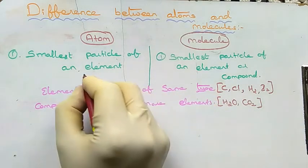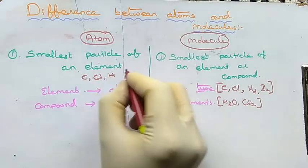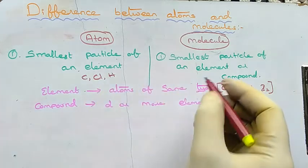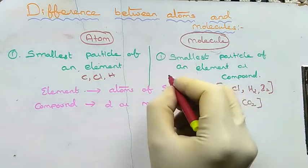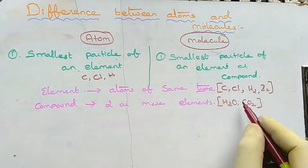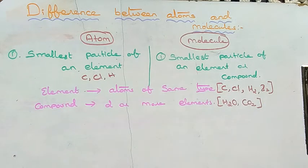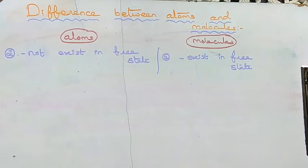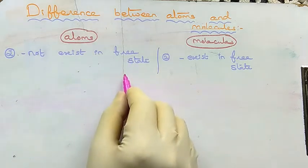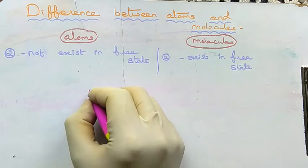Atoms are the single, simplest units of any element, whereas molecules must have at least two or more atoms — whether forming an element or a compound — but must have at least two atoms. Second difference: atoms do not exist in a free state, whereas molecules exist in free state.